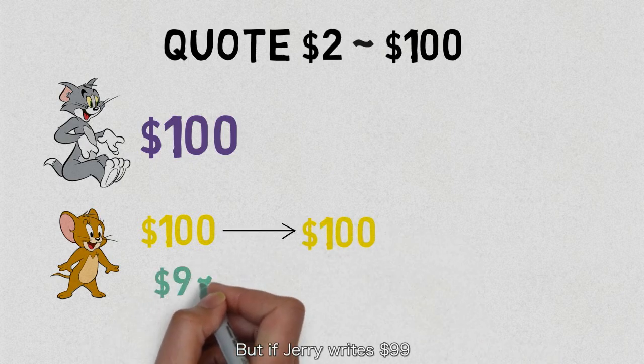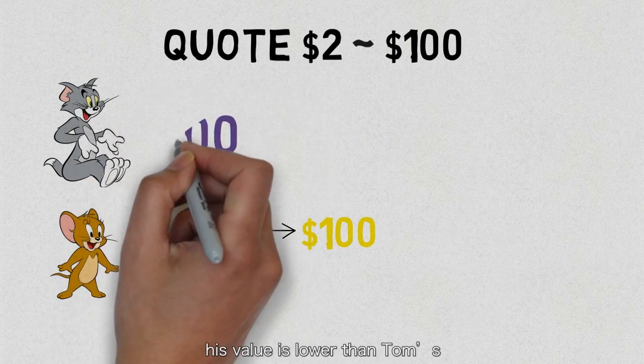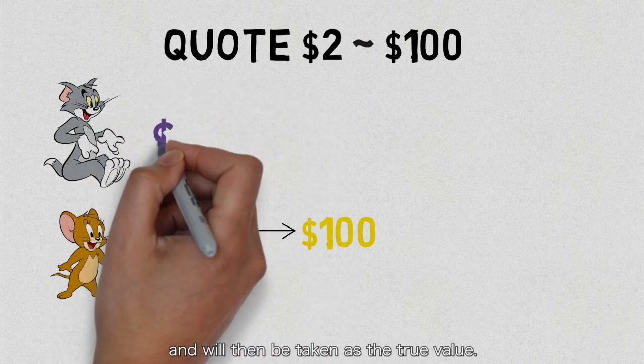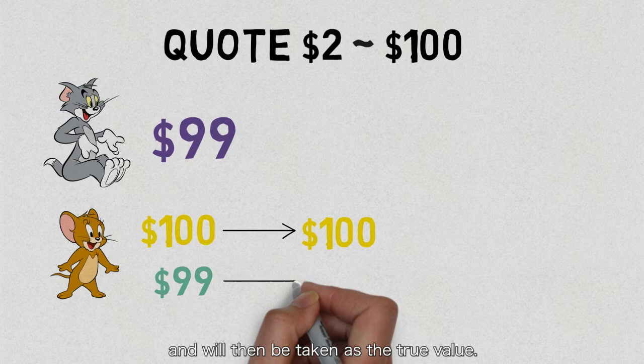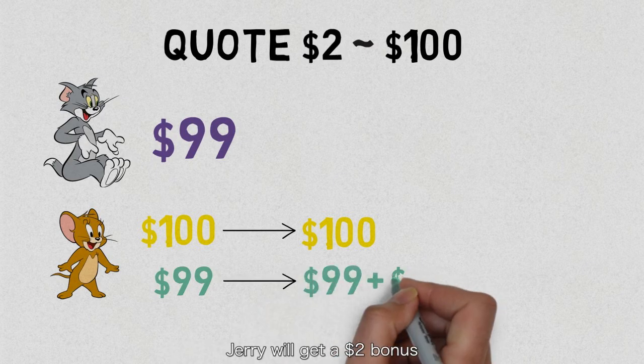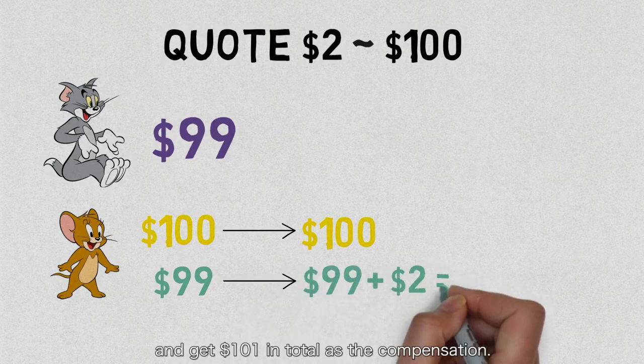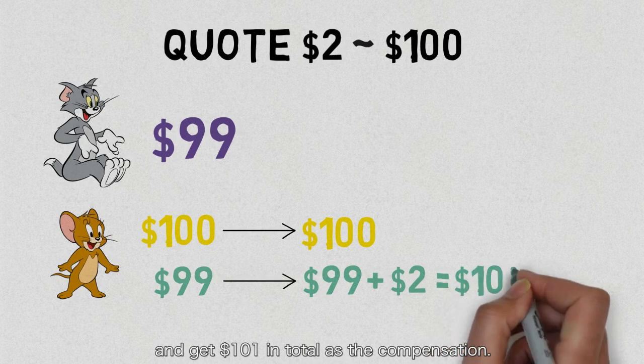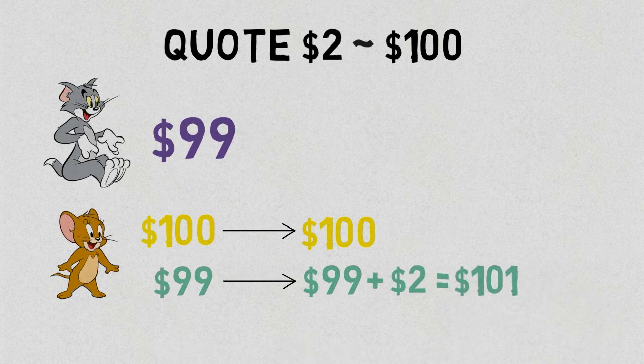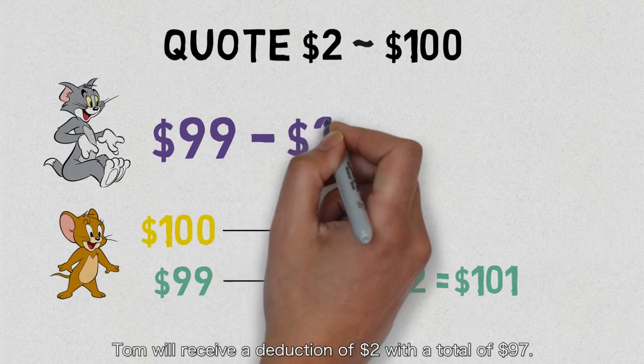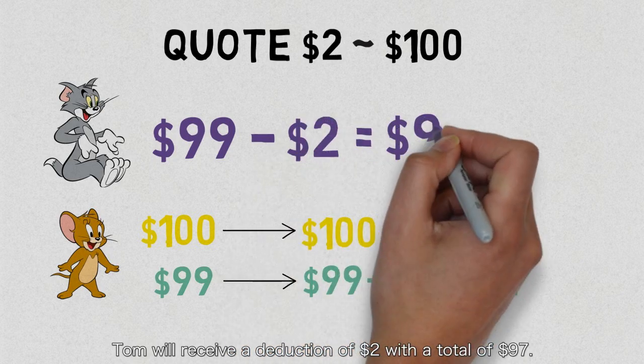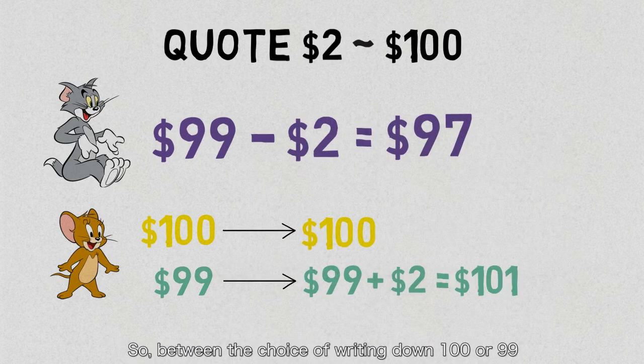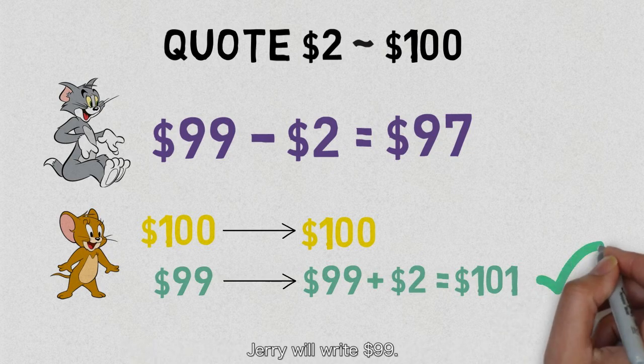But if Jerry writes 99, his value is lower than Tom's and will then be taken as the true value. In this way, Jerry will get a two dollar bonus and get a hundred and one in total as the compensation. On the contrary, Tom will receive a deduction of two with a total of 97. So between the choice of writing down a hundred or 99, Jerry will write 99.